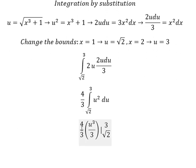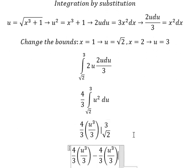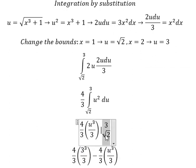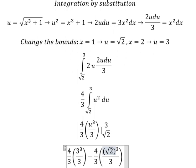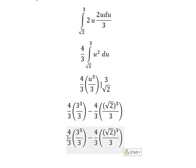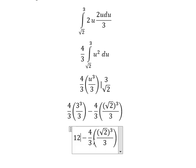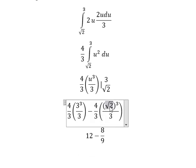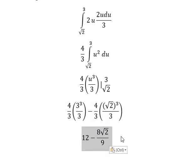Now we have the final answer. We put three in and the square root of two in, giving us 12 minus 8 over 9 times the square root of two. That is the final answer. That is the end — thank you for watching.